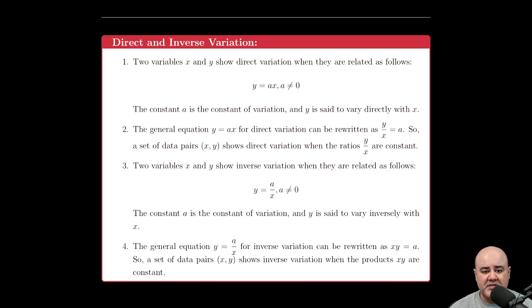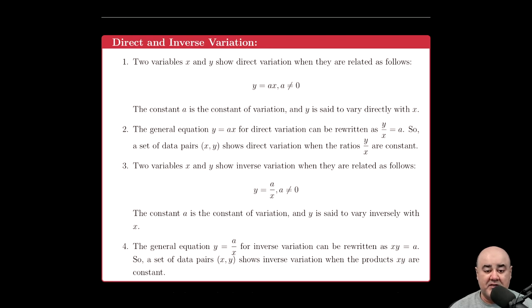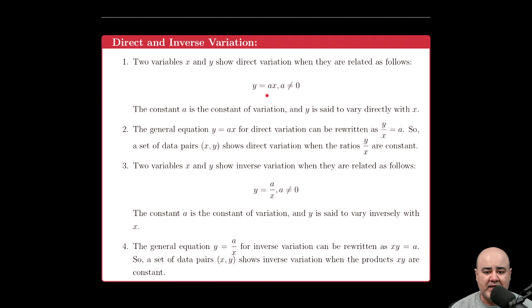The first order of business is to determine the difference between direct and inverse variation. We have two variables, x and y. There's nothing specific about x and y—these variables could be p and q, l and r, a and b, for instance. We say that two variables show direct variation when the relationship between them is as follows: y equals a times x, or y = ax, as long as a is not zero.